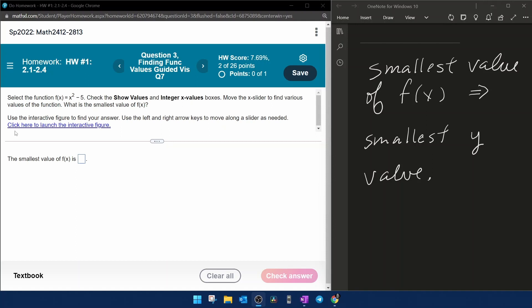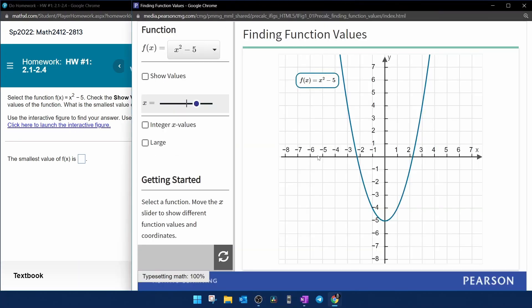The first thing we're going to want to do is click here to launch the interactive figure, and that is going to open up a pop-up window. They want us to select f(x) equals x squared minus five. You're going to have a list of functions here. It looks like x squared minus five is initially selected.